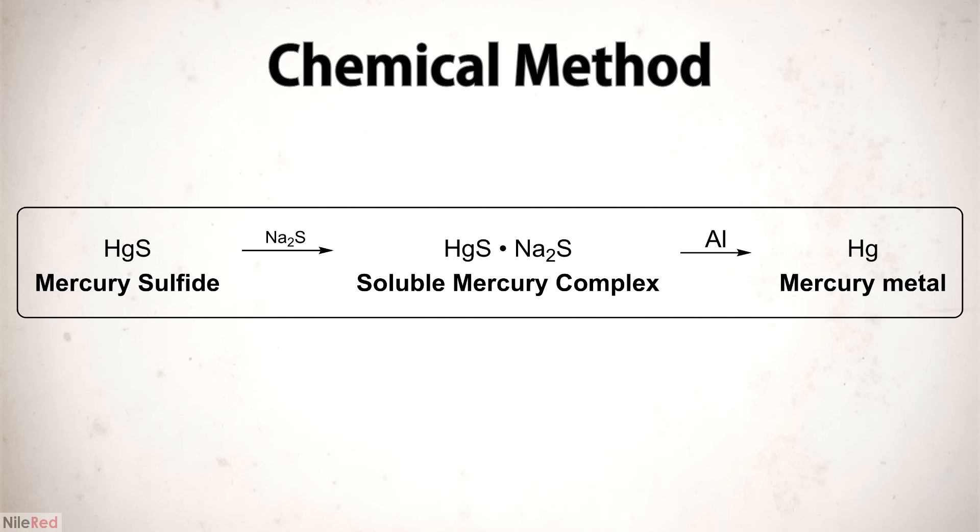The other option is to chemically reduce the mercury sulfide back to the metal. As the mercury metal is formed, it will sink down and collect at the bottom. The chemical method is safer because it doesn't produce any mercury vapor. However, it inevitably makes a lot of mercury contaminated waste that needs to be dealt with.